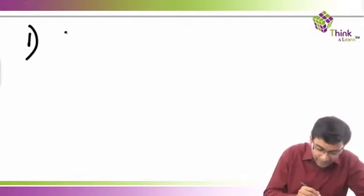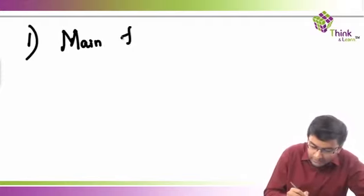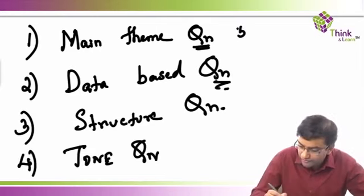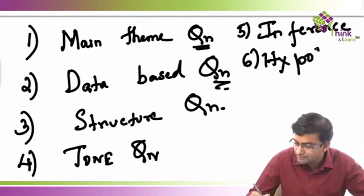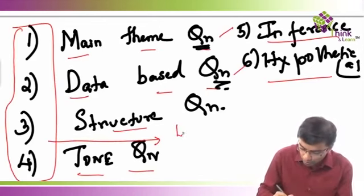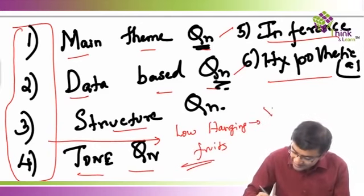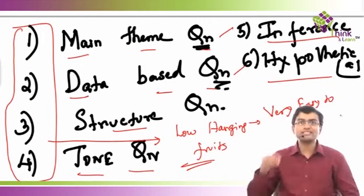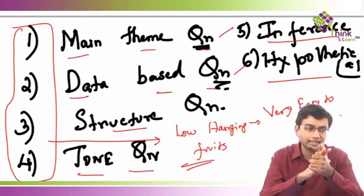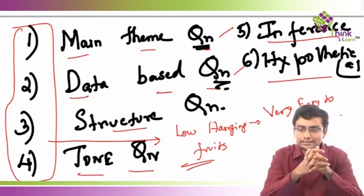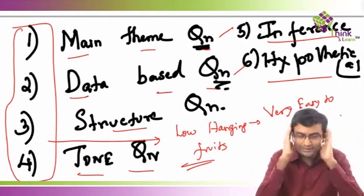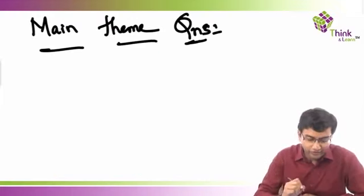There are fundamentally six types of questions in RCs. The first category is the main theme question. The second is the database question. The third is structure questions. The fourth is tone questions. The fifth is inference, and the sixth is hypothetical questions. You just have to remember six categories. The first four categories are what I call low hanging fruits — they are very easy to solve. For many of these questions you don't even have to fully understand the passage to get the answer. I will also teach you how to verify the answer after you pick it.